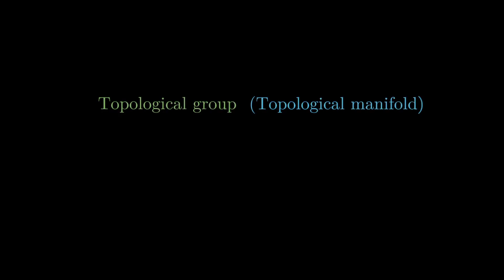A topological group, which is also a topological manifold, has an underlying Lie structure. In other words, is isomorphic to a Lie group.